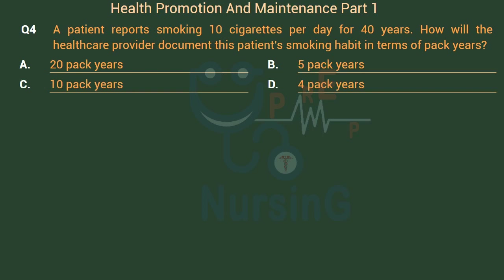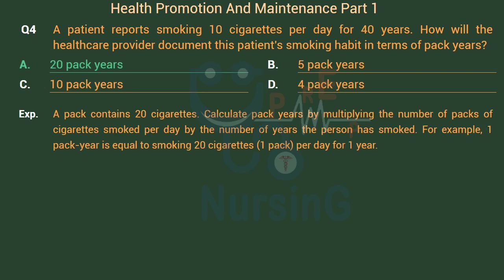The right answer is Option A: 20 pack years. A pack contains 20 cigarettes. Calculate pack years by multiplying the number of packs of cigarettes smoked per day by the number of years the person has smoked. For example, 1 pack year is equal to smoking 20 cigarettes, 1 pack per day for 1 year.